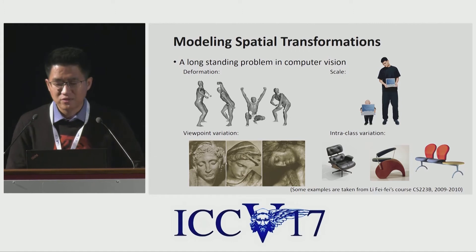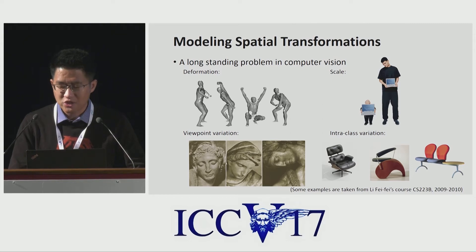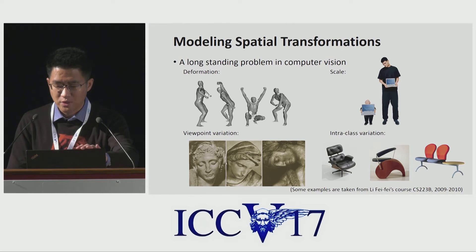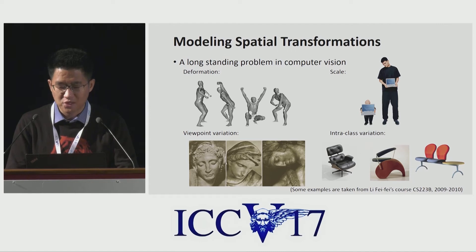A long-standing challenge in visual recognition is how to accommodate geometric variations or model geometric transformations. Such geometric variations widely exist in natural images, which may arise from differences in object scale, pose, viewpoint, and part deformation.